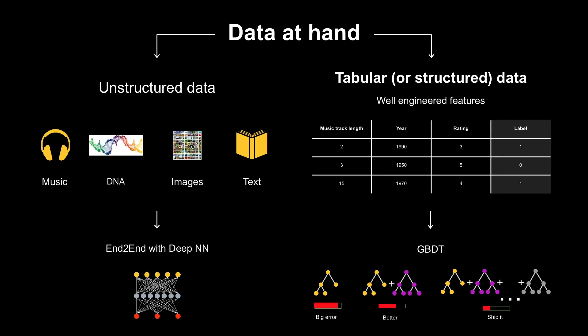Let's start by talking about data that is used in machine learning. Here you can see one way to classify types of data used to solve practical problems today. First, we have so-called unstructured data like images and video, where deep learning techniques are currently dominating. Second, we have tabular or structured data, where well-engineered features are used to describe a sample we use to make predictions. Features are typically float numbers, and with this type of data, state-of-the-art results are achieved by GBDT.